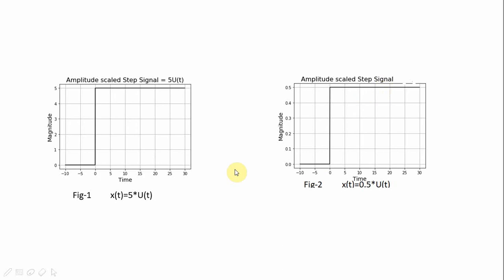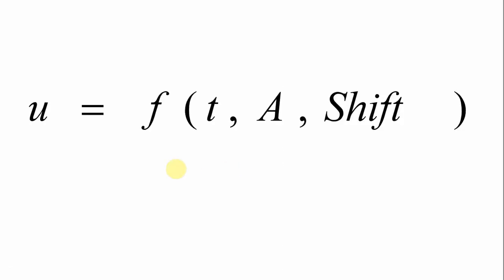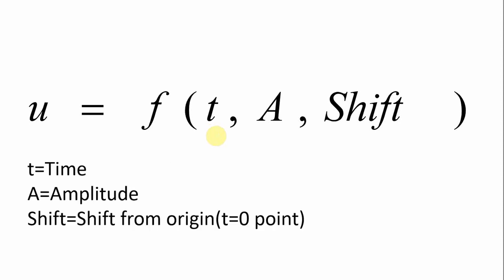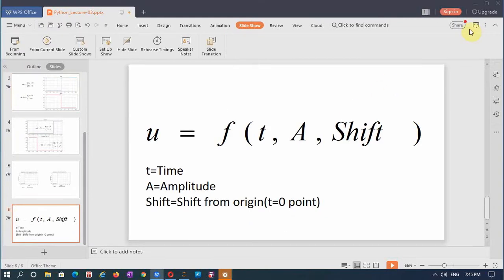Combining all of this, we can write a step signal as a function of time t, amplitude a, and shift, where t is the time, a is the amplitude, and shift is the shift from the origin — that is, from the point t = 0 on the waveform. With this introduction, let me take you to the Jupyter notebook.